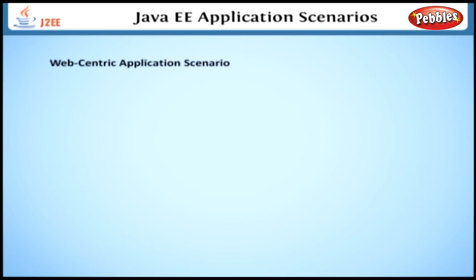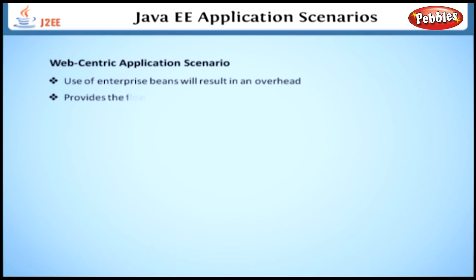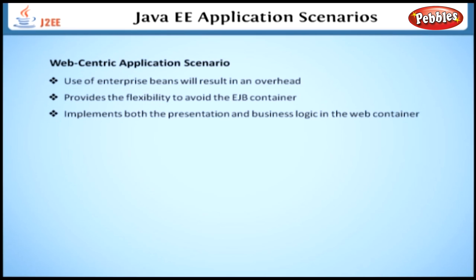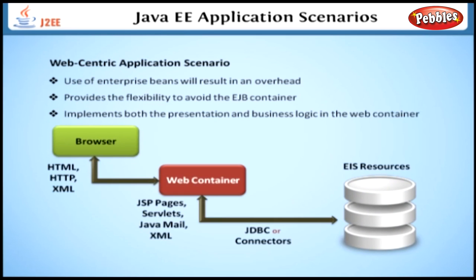Next is the web-centric application. In many cases, the use of enterprise beans results in overhead. So Java EE provides the flexibility to avoid the EJB container and implement both the presentation and business logic in the web container. The browser communicates with the web container, and the web container uses JDBC or other connectors to access the EIS resources.